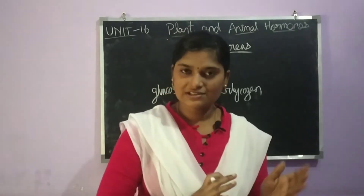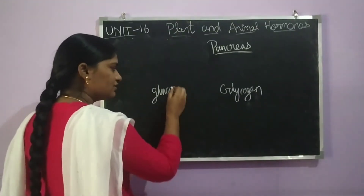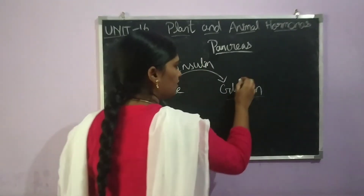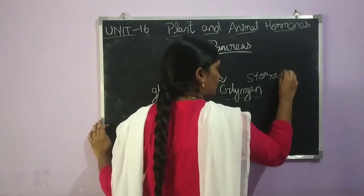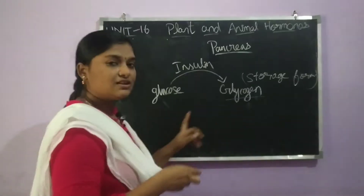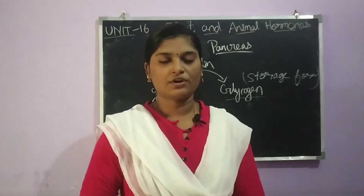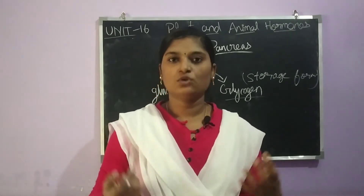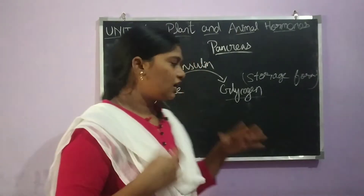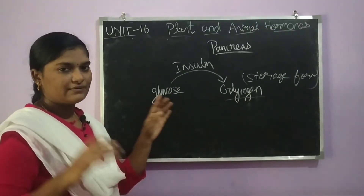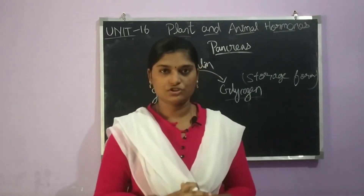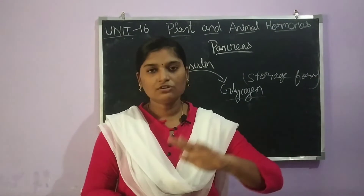Insulin promotes the conversion of excess glucose into glycogen, which is the storage form of glucose. Excess glucose is stored as glycogen in the liver and skeletal muscles. So insulin automatically converts excess glucose into glycogen, thereby lowering blood glucose levels. This is the insulin function — it reduces blood glucose.